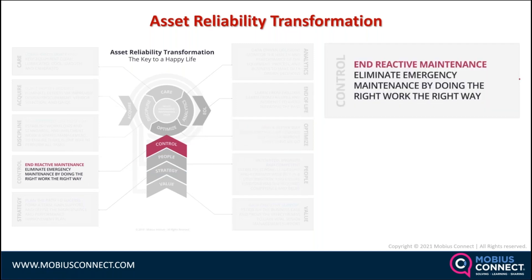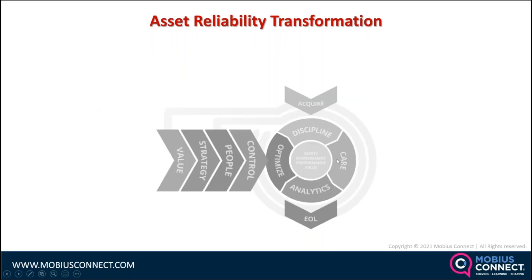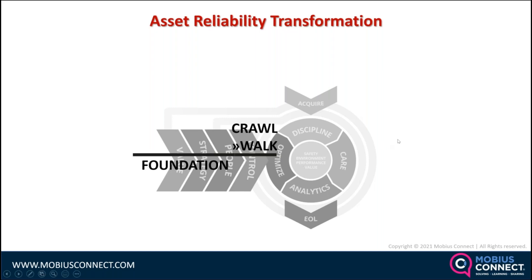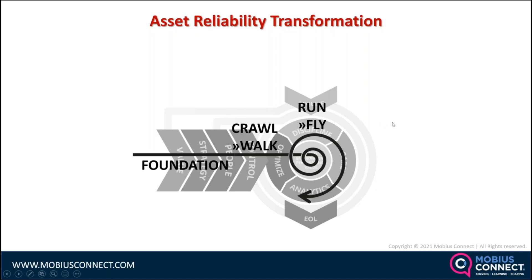We must overcome the major barrier: the reactive maintenance cycle of doom. The control phase — getting maintenance under control — is a transition phase. Think of it like putting the training wheels on: just getting started with basic planning and scheduling, basic asset care, and so forth. We set the foundation through the value, strategy, and people phases, then learn to crawl and walk through the control phase, getting reactive maintenance under control and the fundamentals in place. Then we can go further with the discipline, care, optimize, acquire, and end-of-life phases.